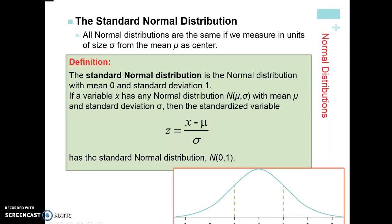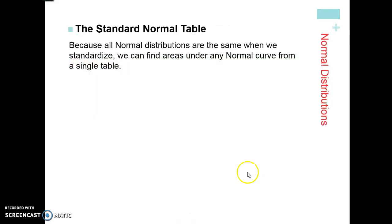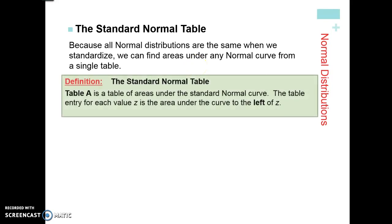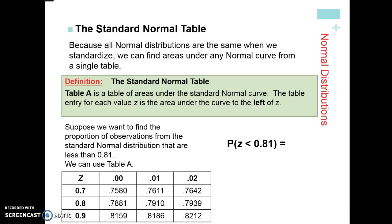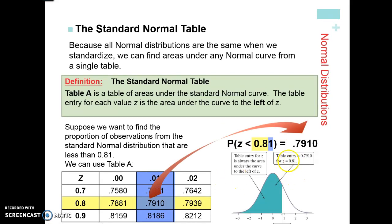Because all normal distributions are the same when standardized, we can find the area under any normal curve from a table or graphing calculator — though I'd highly suggest the calculator since it's much quicker. For example, to find the proportion of observations from the standard normal distribution less than Z = 0.81: on the table, go down to 0.8 and scroll over to the 0.1 column. That gives 0.7910 — so about 79% of the area falls to the left of Z = 0.81.